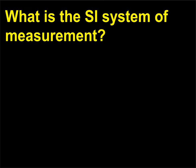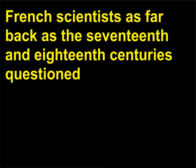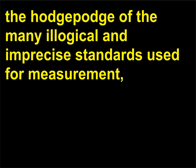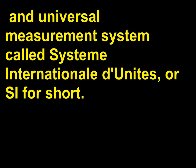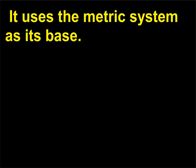What is the SI system of measurement? French scientists as far back as the 17th and 18th centuries questioned the hodgepodge of the many illogical and imprecise standards used for measurement, and they began a crusade to make a comprehensive, logical, precise, and universal measurement system called Système International d'Unités, or SI for short. It uses the metric system as its base.